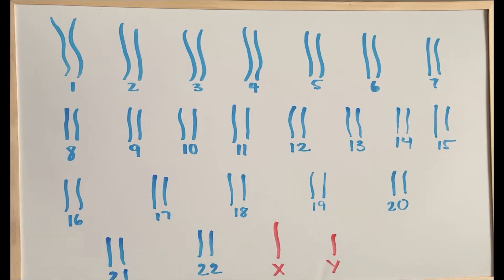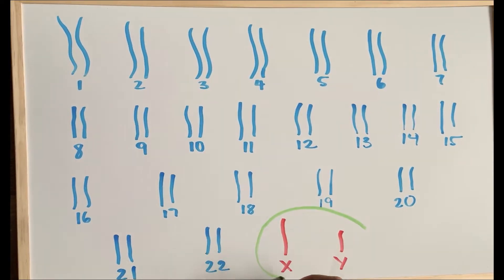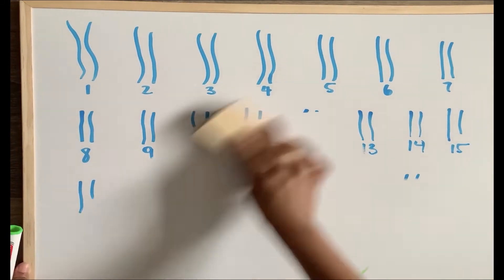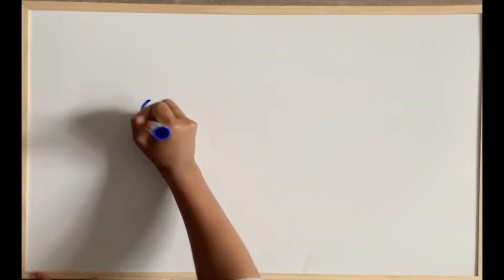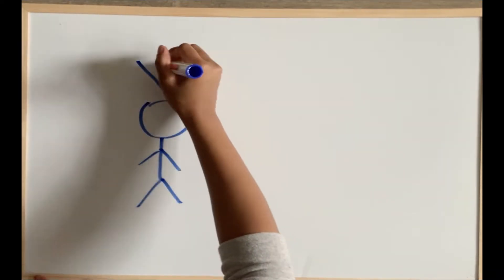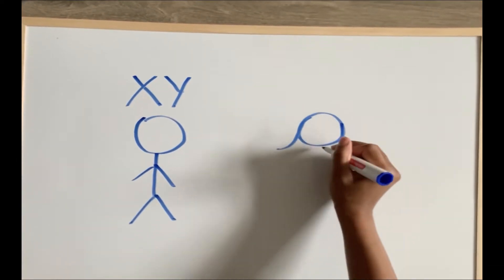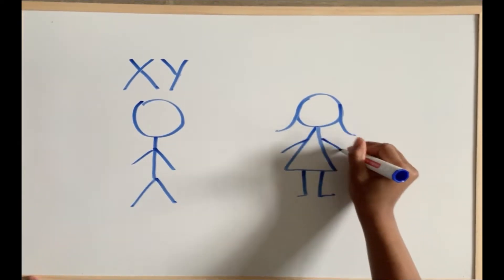Humans typically carry 23 pairs of chromosomes, or 46 individual chromosomes, with one pair being the sex chromosomes. These chromosomes differ in males and females, as males normally have one X and one Y, while females typically have two X chromosomes.